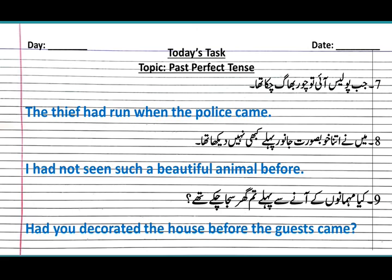For interrogative sentences in past perfect tense, we put 'had' at the beginning, then subject, then third form of verb. For example: 'Had you decorated the house before the guests came?'